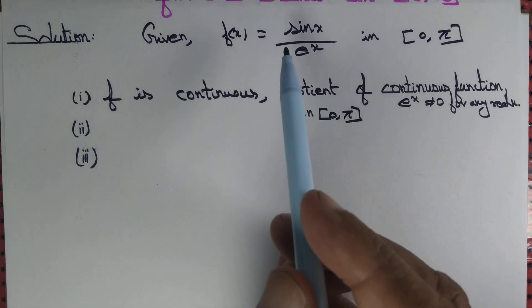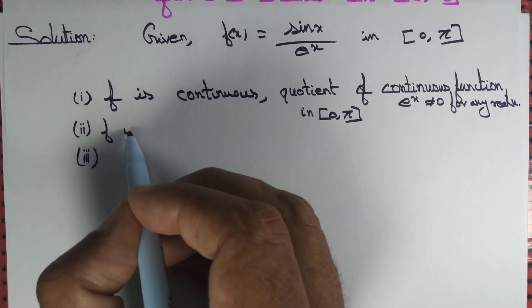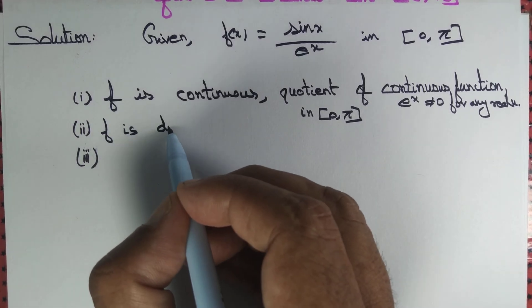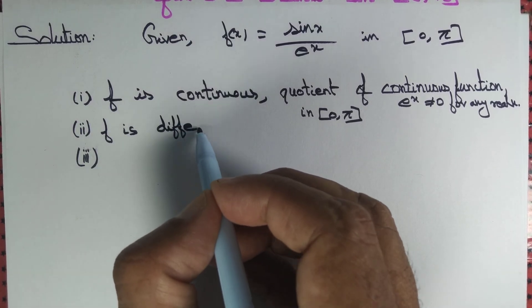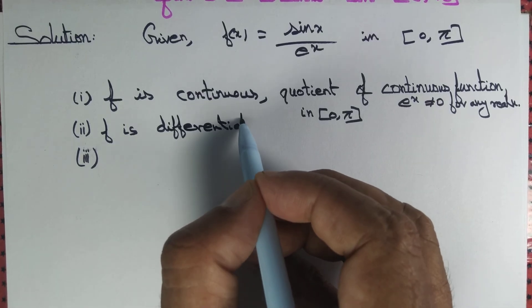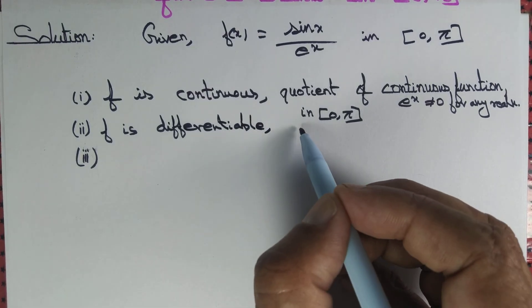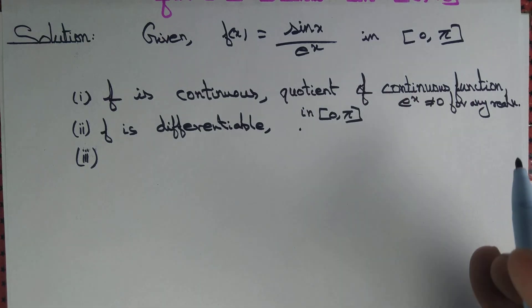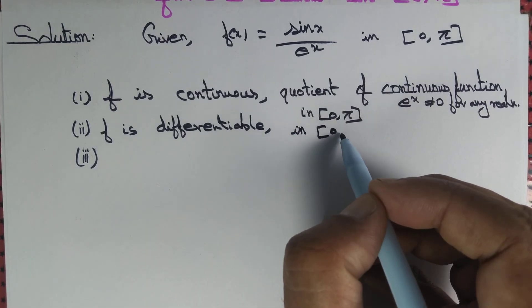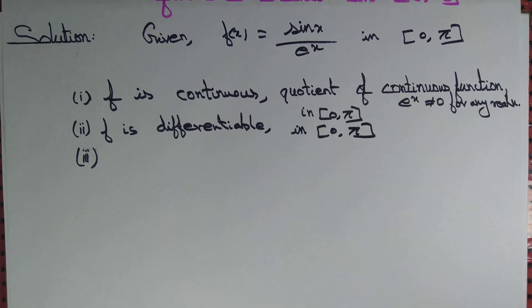Next, we need to show that f is differentiable. Of course, f is differentiable — it is a quotient of differentiable functions in the interval (0, π). In fact, it is differentiable throughout ℝ.